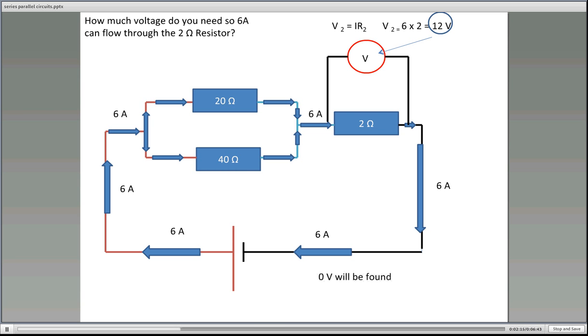So 0 volts we found along this line here at that point, and also at that point there, and that point as well. And 12 volts will be found at this point here, up to that point there. So far we know we've only got 12 volts there, which we need to do a bit more working out to work out the voltage drop across the 20 and the 40 ohm before we can actually work out the supply voltage.